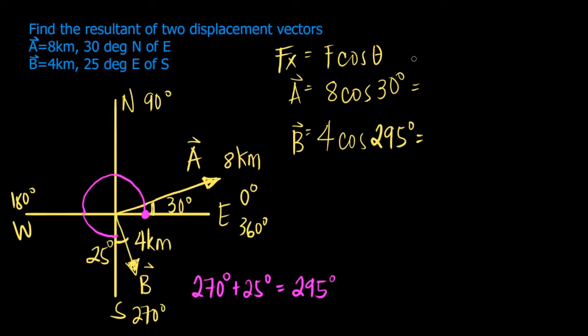So let's solve. That's 8 cosine 30, that's 6.93 kilometers. 4 cosine 295, that's 1.69 kilometers.